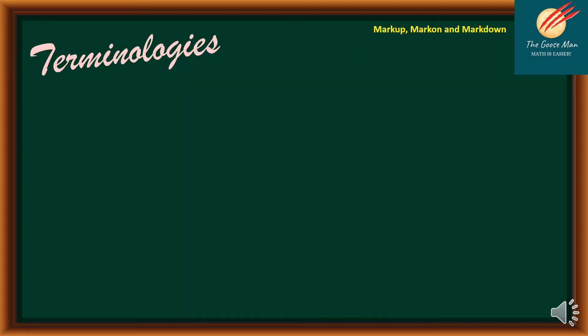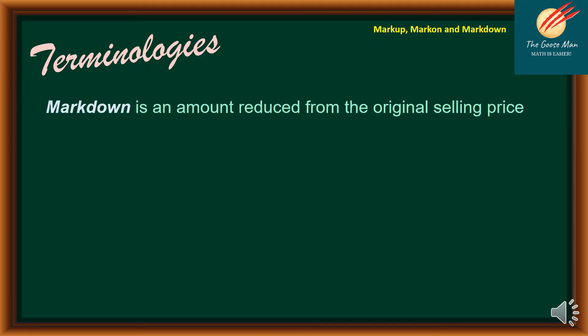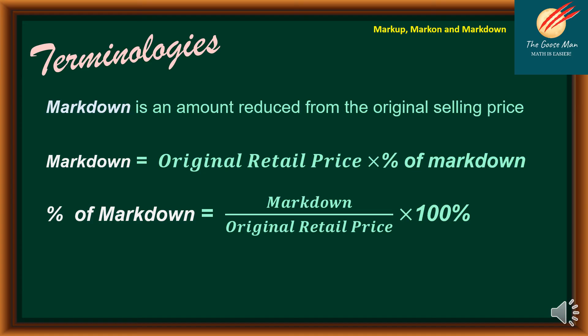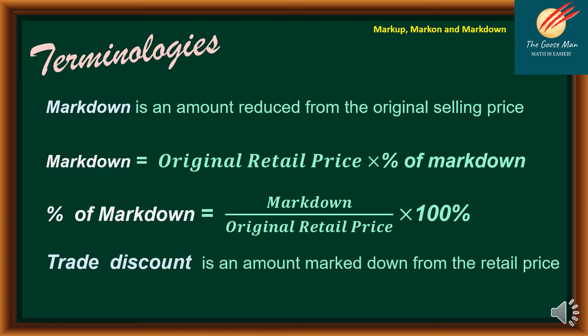While it is important to know amounts added to the cost, determining the selling price also entails knowing when to reduce it. An amount reduced from the original selling price is called markdown. Markdown = original retail price times percent of markdown. Percent of markdown = markdown divided by original retail price times 100%. Markdown is commonly known as trade discount — an amount marked down from the retail price.